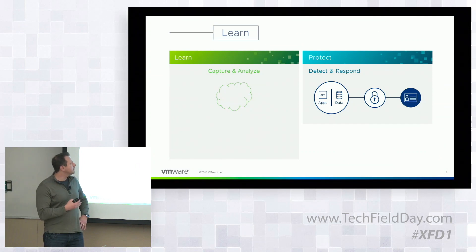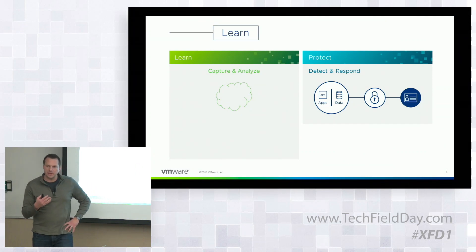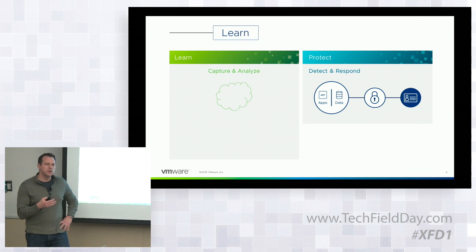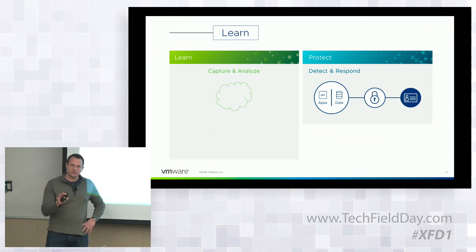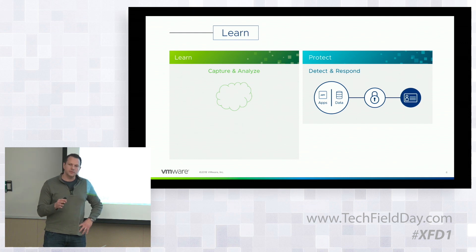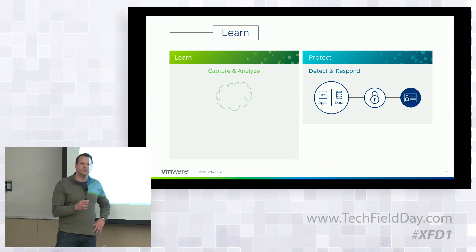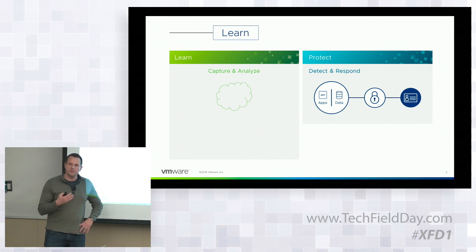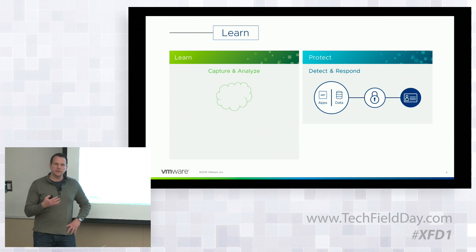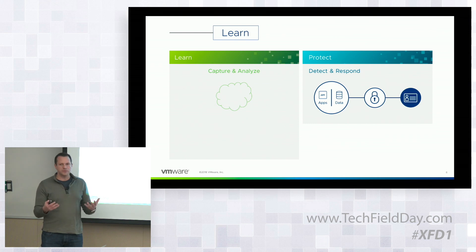The way this works is we want to capture and analyze intended state — we first want to model what we expect to see in your environment specifically. This is what we refer to as the learn phase. It's very hard to enforce any type of least privilege zero trust security unless you first go through a modeling or learning phase. Every time a VM is inserted into the AppDefense domain, we first start profiling it and learning what's expected state.